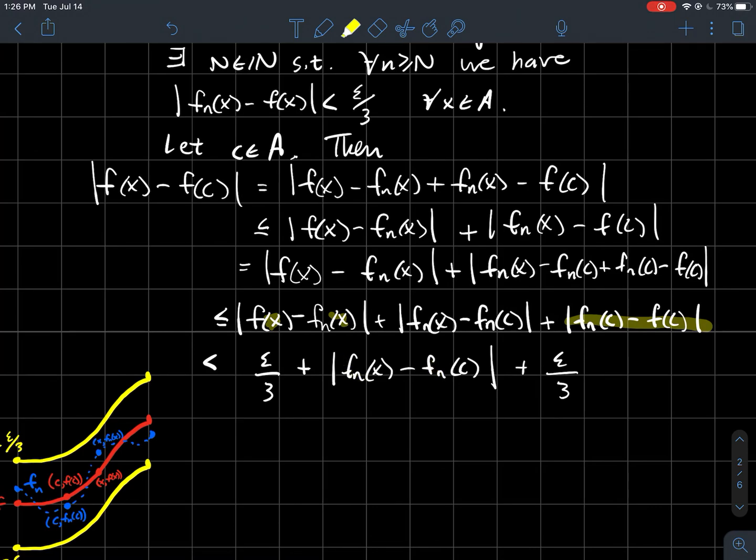So if needed, if I need to make sure this is epsilon over three, because fn is continuous, I'm guaranteed to find some window around c so that the x is in that window will make this whole expression less than epsilon over three.